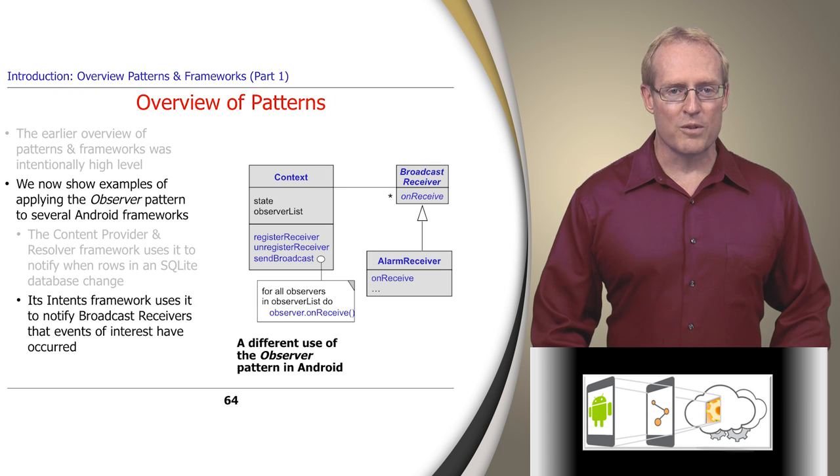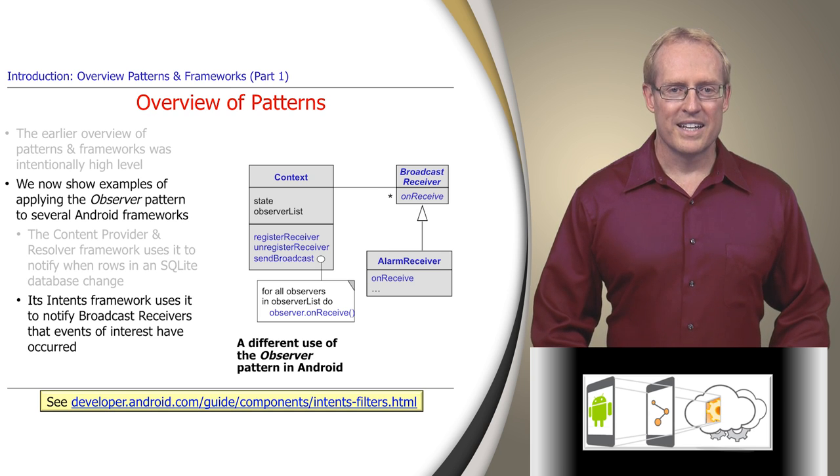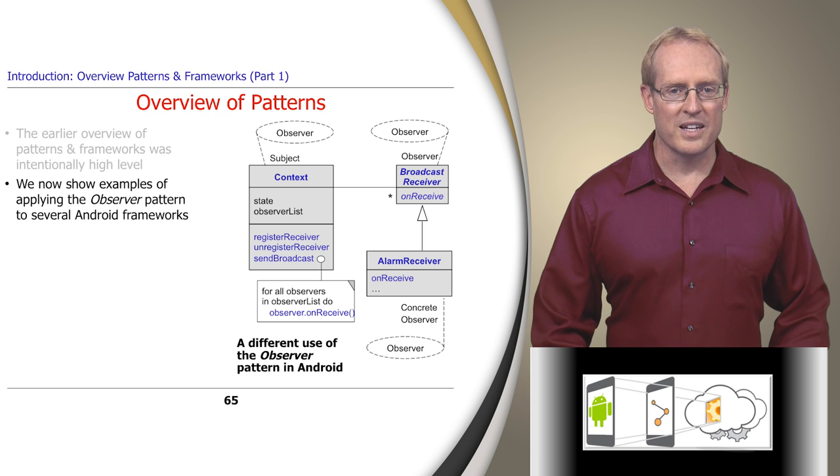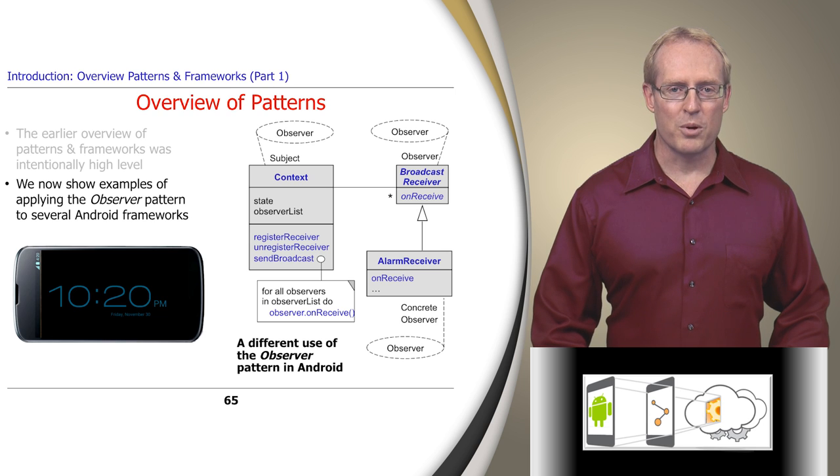Android also uses the observer pattern in its Intent framework, which is a powerful mechanism that activates and notifies activity, service, and broadcast receiver components asynchronously, as described at this link. This UML diagram maps the key programming elements in the Intent framework to the observer pattern, also using the Desk Clock application. For example, Broadcast Receiver is an abstract observer that's extended by the Desk Clock application to create an alarm receiver that connects an alarm alert intent receiver to an alarm alert activity, as shown at this path name. The Android Context Object plays the role of the subject, which notifies the registered alarm receiver when an alarm alert event occurs.